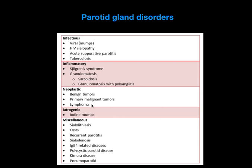Always remember, in evaluation of parotid gland disorders, the main categories are infectious, inflammatory, neoplastic, iatrogenic, and many miscellaneous conditions. The most common include viral parotitis such as mumps, acute suppurative parotitis as in our case, and tuberculosis parotitis, which has become very common nowadays. Inflammatory conditions include Sjögren's syndrome and granulomatous diseases like sarcoidosis or granulomatosis with polyangiitis.